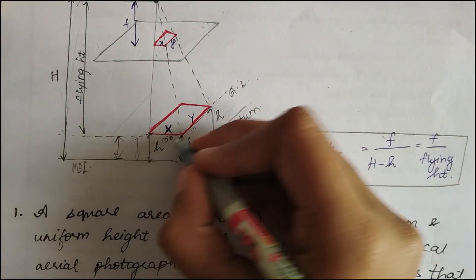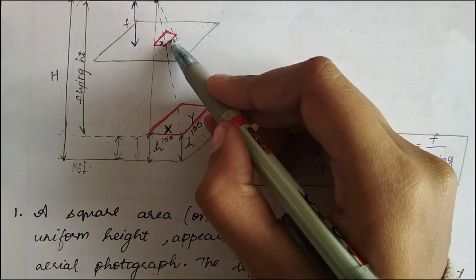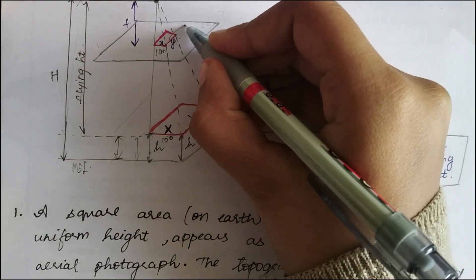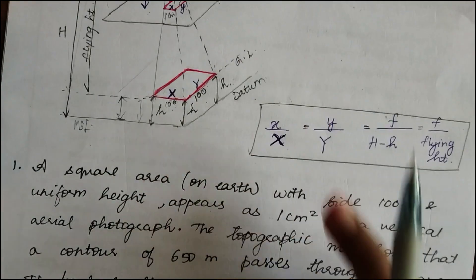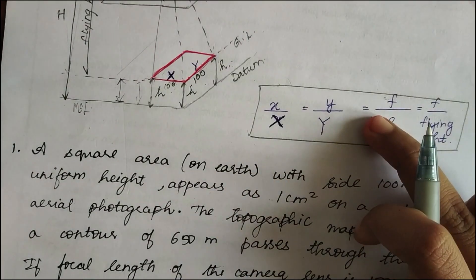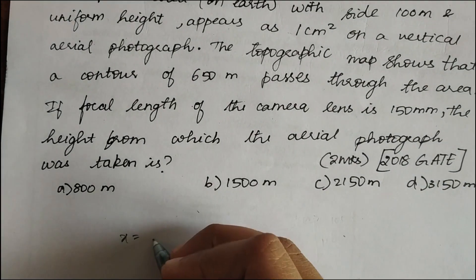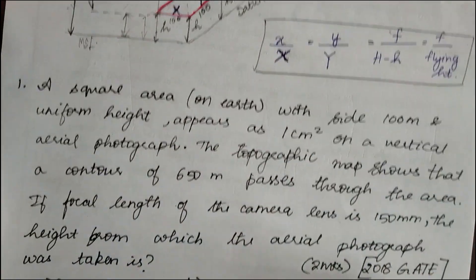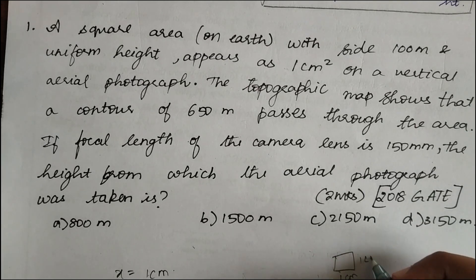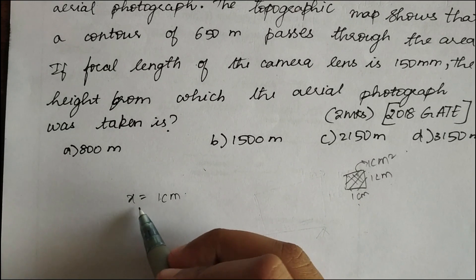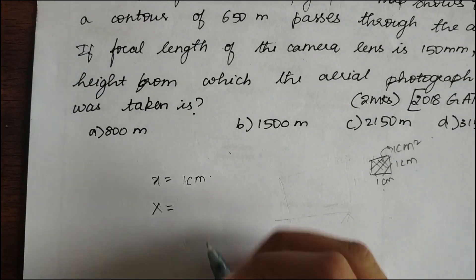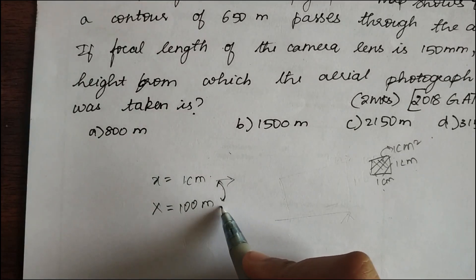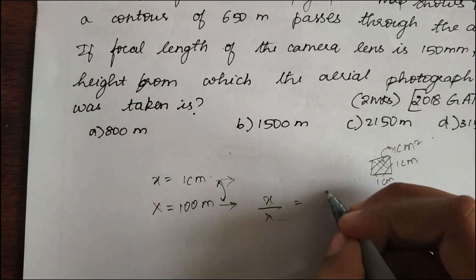The square area has sides of 100 meters, appearing in the photograph as 1 centimeter by 1 centimeter, giving an area of 1 centimeter square. So small x is 1 centimeter and capital X is 100 meters. Converting capital X to centimeters gives 10,000 centimeters. Therefore x divided by X equals 1 divided by 10,000.